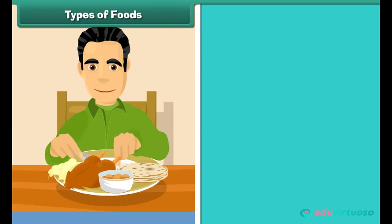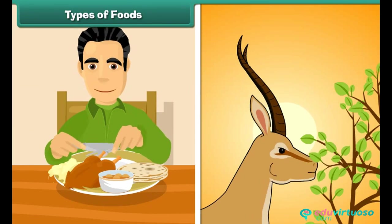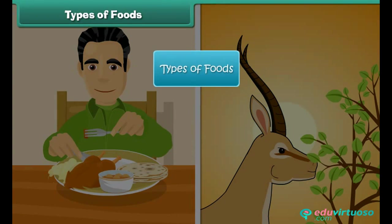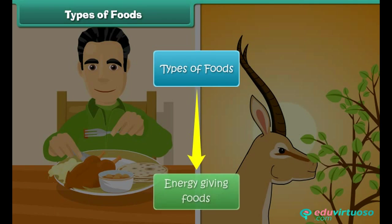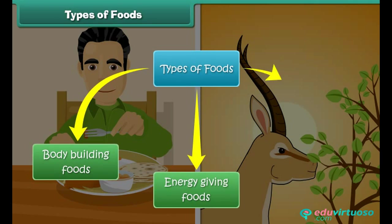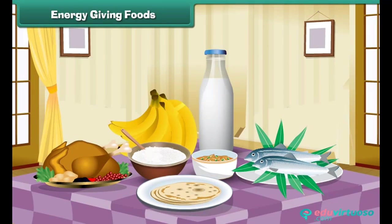Types of foods. All living things need food to live and grow. They require three types of foods: energy giving foods, body building foods, and protective foods.